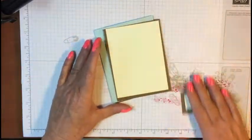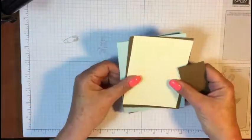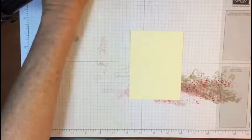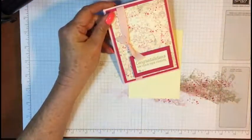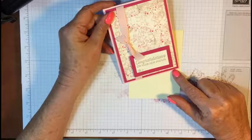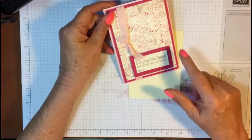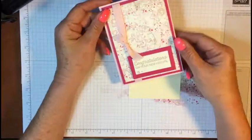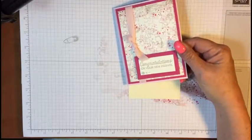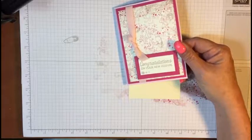So what we're gonna do is start by stamping this background area. This one right here is powder pink and melon mambo, and this one is Sahara sand.